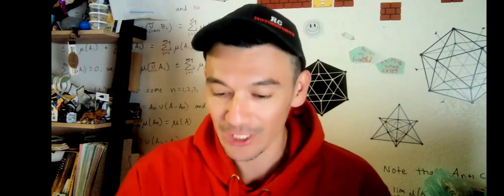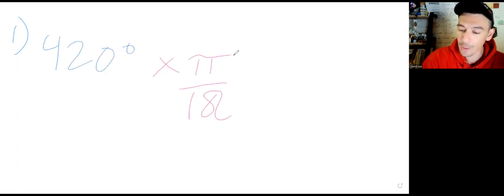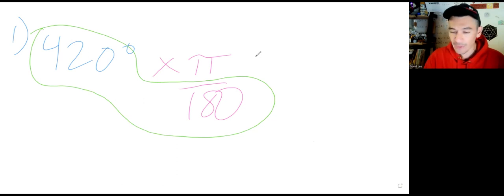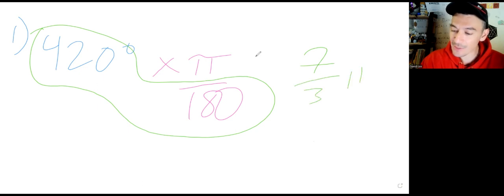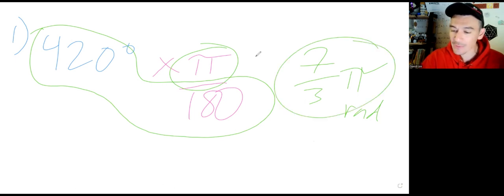Let's go through this entire review worksheet. I have my calculator here, and so should you. Number one: convert to radians. We have 420 degrees. To turn this into radians, we multiply by pi over 180. On the calculator, just type in 420 over 180 and hit enter — it should reduce to 7 thirds. Write 7 thirds and attach the pi symbol. The answer is 7 pi over 3 radians.